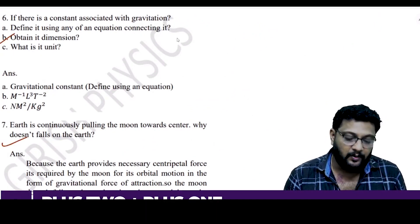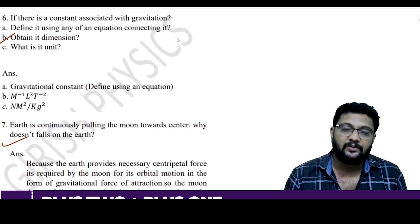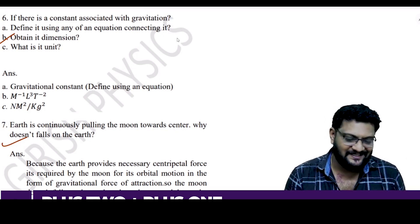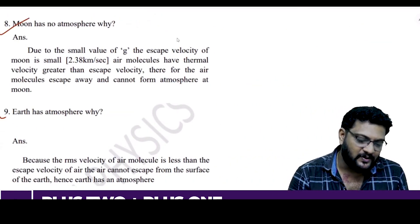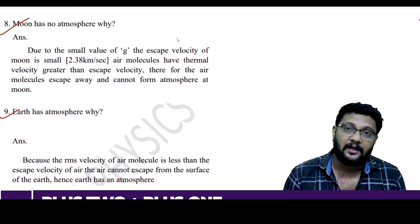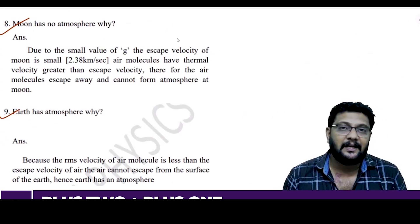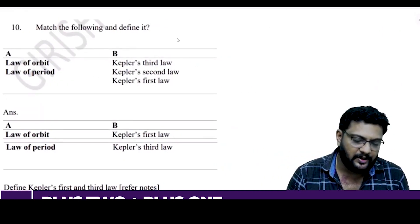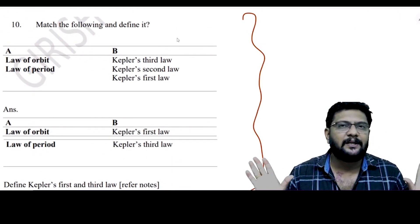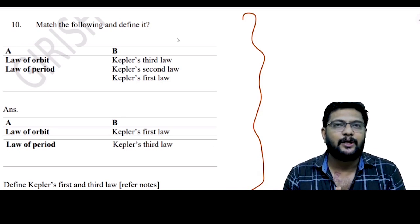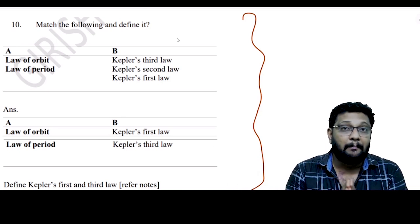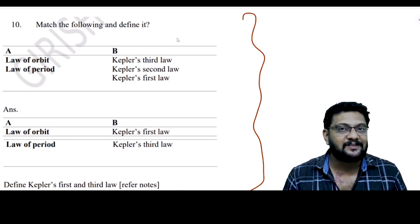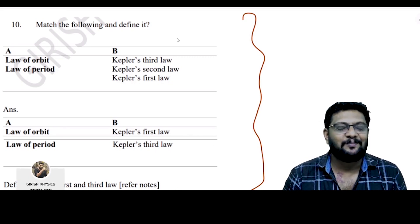The Earth continuously pulls the Moon toward its center. The Moon has no atmosphere. Earth's escape velocity is 11.2 km/s and Moon's is 2.3 km/s — this is why Earth has an atmosphere but the Moon does not. Please subscribe and share the channel.